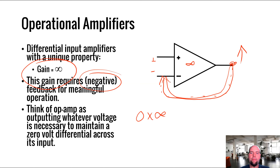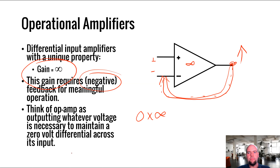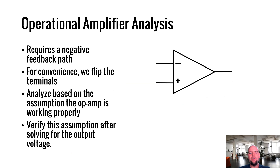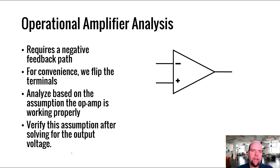If you have positive feedback, then if you start to get a little voltage difference across the inputs, the output is going to make it worse - it'll increase the potential on the positive terminal, making the difference bigger, and it'll all just blow up to infinity. If this is starting to not make sense, examples will help clear it up, so hold on and we'll get to some examples and it'll probably be fine.